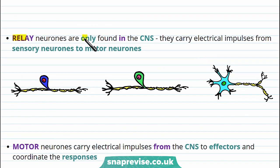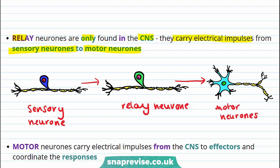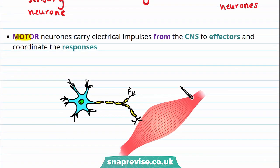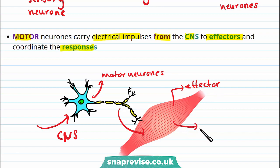Relay neurons are only found in the CNS, and their job is to carry electrical impulses from the sensory neurons to the motor neurons. Motor neurons carry the electrical impulses from the CNS to the effectors and coordinate responses. Remember, effectors are things like muscles or glands, and the responses could include things like prey running away from a predator. These motor neurons carry information to the effectors — in this case a muscle — and the effector then produces a response.